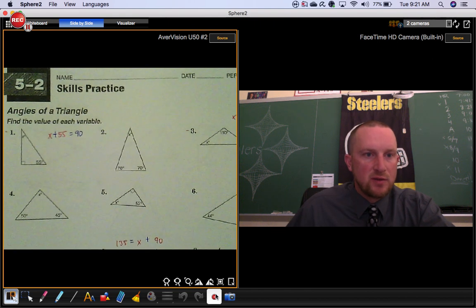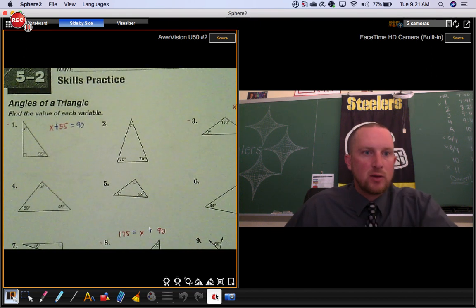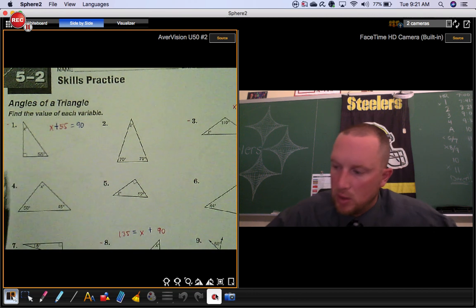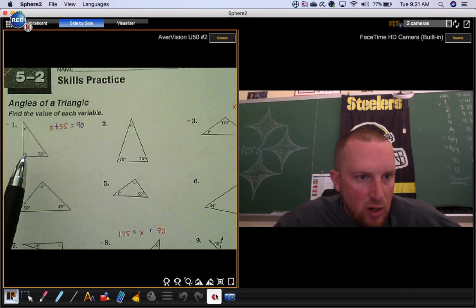This is the skills practice for section 5.2. We're going to find the value of each variable. So in this one they give you a triangle and notice how it's a right triangle.